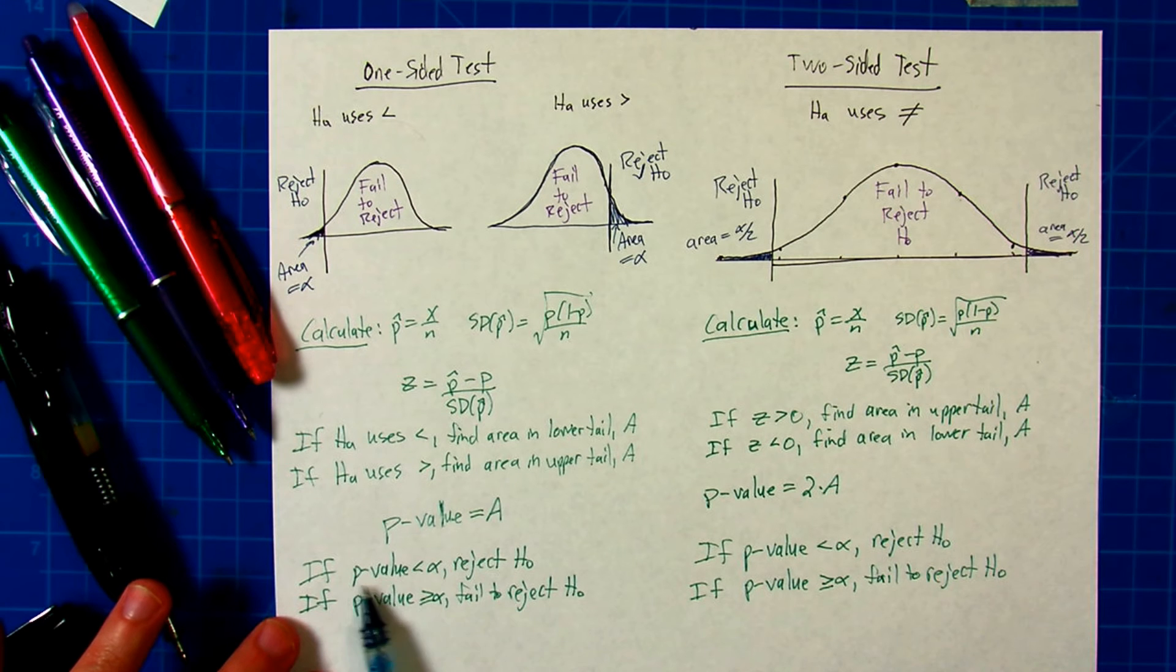From there, the conclusion is: if the p-value is less than alpha, you reject the null hypothesis. If the p-value is greater than or equal to alpha, you fail to reject.